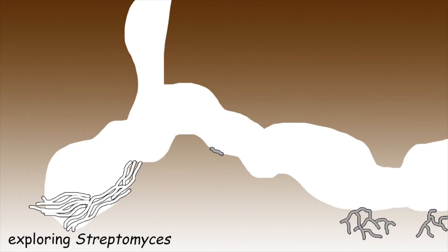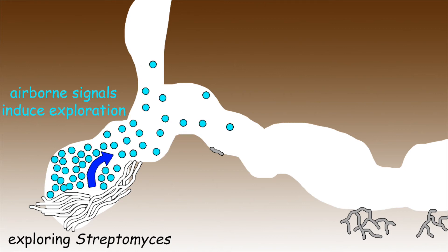A completely unexpected aspect of exploration is that it can be communicated to more distant Streptomyces via a volatile compound known as trimethylamine, or TMA. TMA appears to be produced at the onset of exploration, and it serves as a tool for both communication and cooperation, as well as competition. It raises the pH in the vicinity of the producing colony, and this change in pH can be recognized by more physically separated Streptomyces, signaling them to begin exploration.